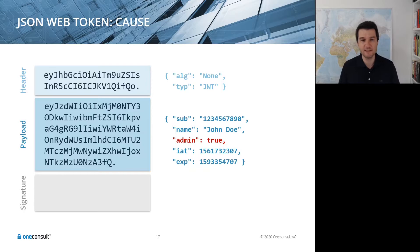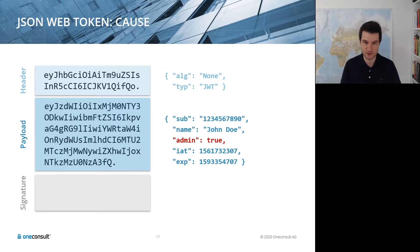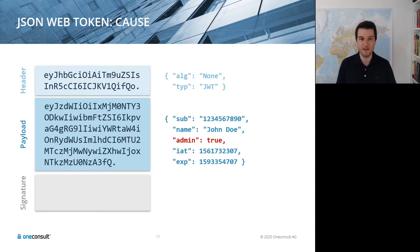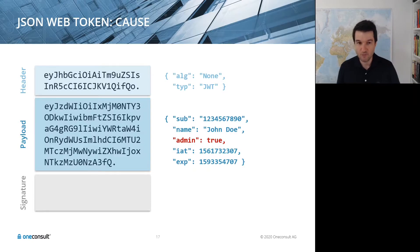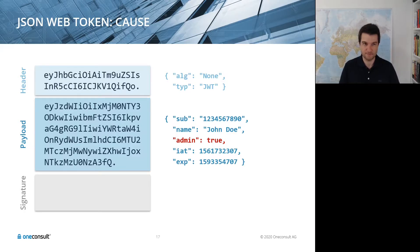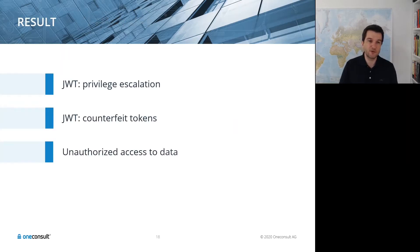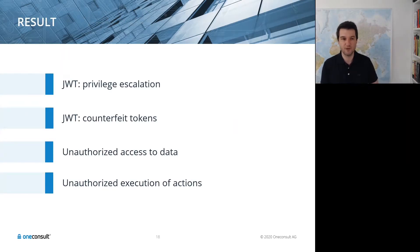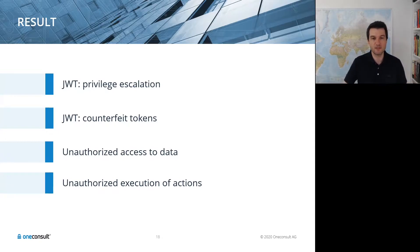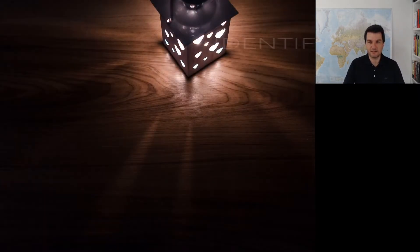In the early days of JWT libraries, or if you roll your own implementation — which is highly discouraged — if one implements the JWT specification to the letter, there is a 'none' algorithm where you can simply remove the signature and still have a valid JWT signed with no signature. The result can be privilege escalation and counterfeit tokens, or more generally, unauthorized access to data and actions.